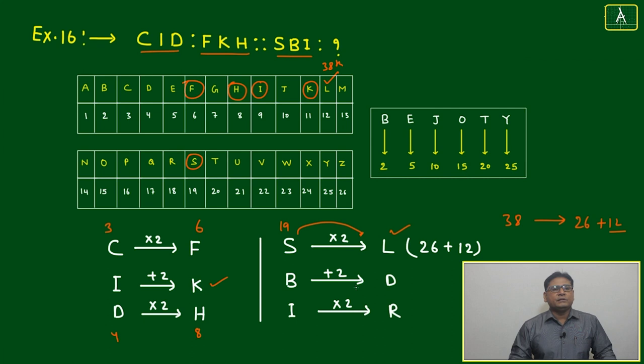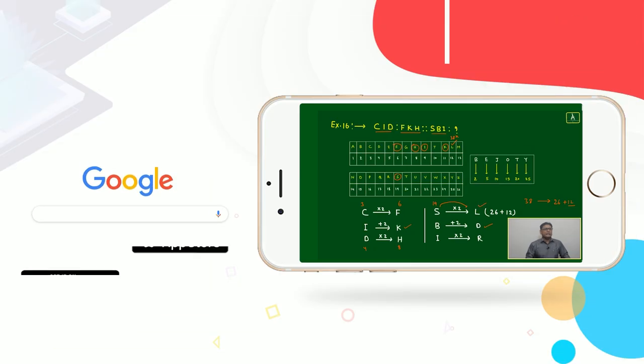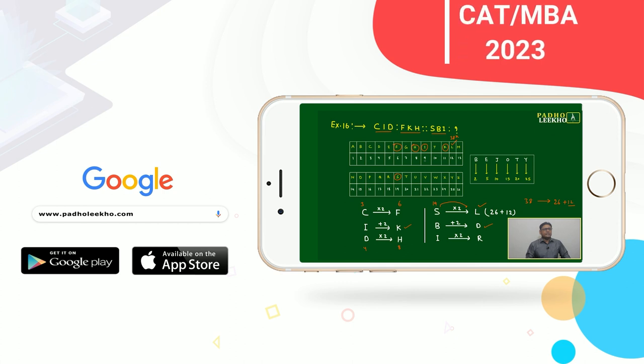B plus 2 will be D. There is no issue. I into 2, because I is 9 multiplied by 2, becomes 18, which is R. This means SBI will be interrelated in a similar way by LDR.